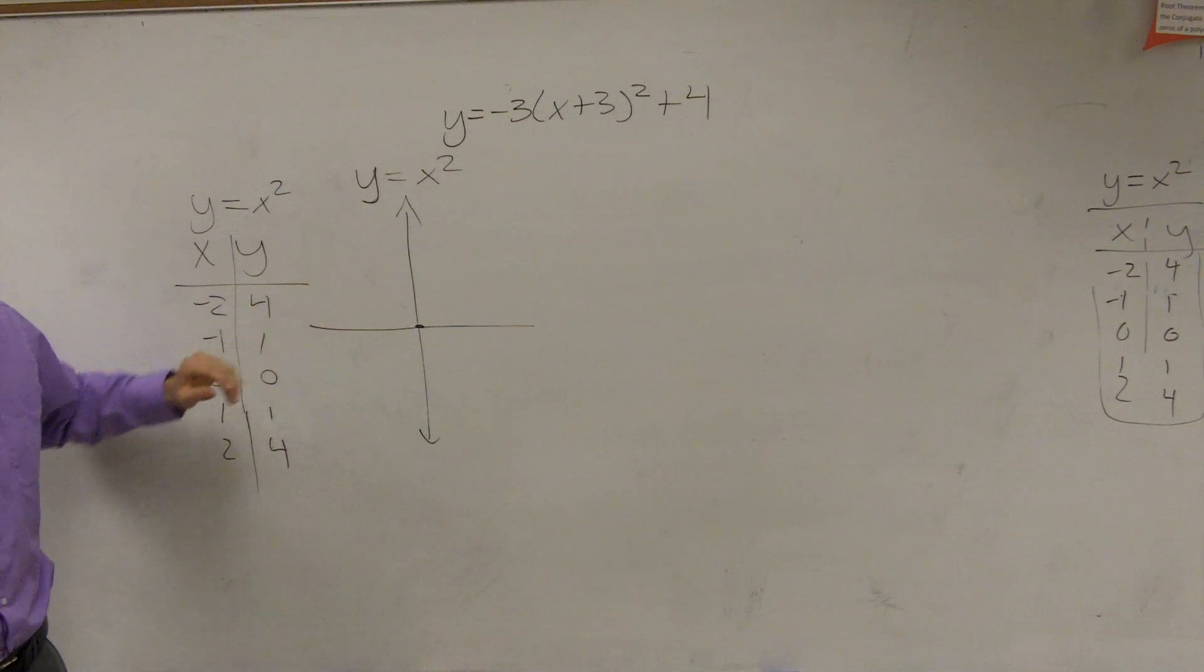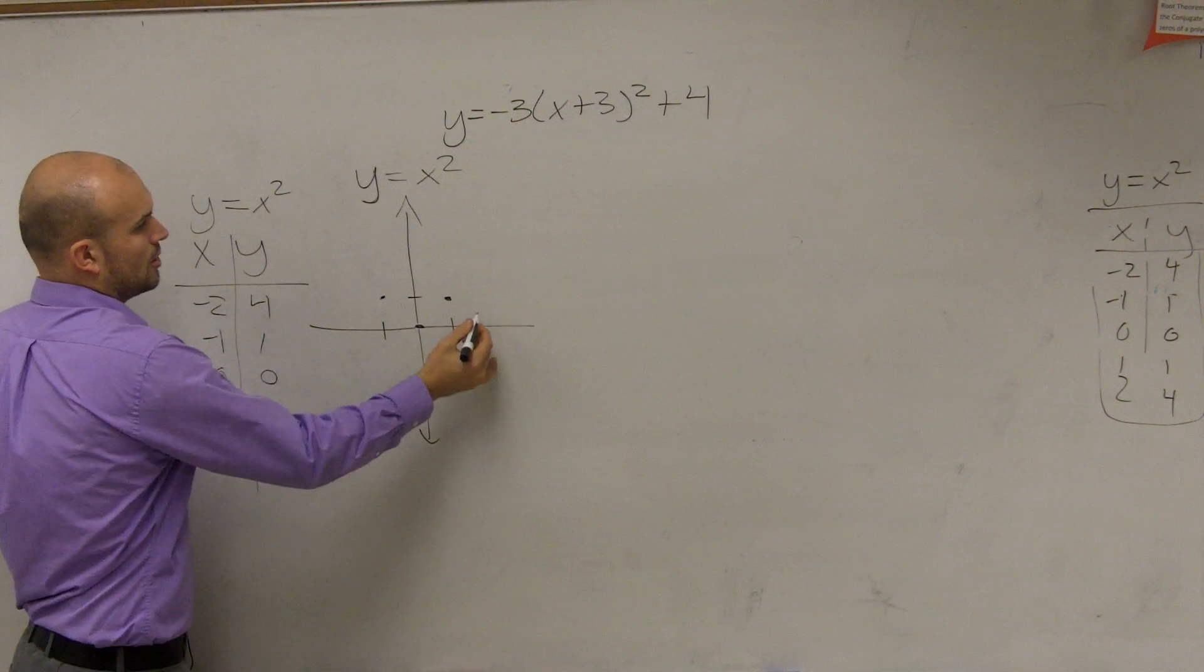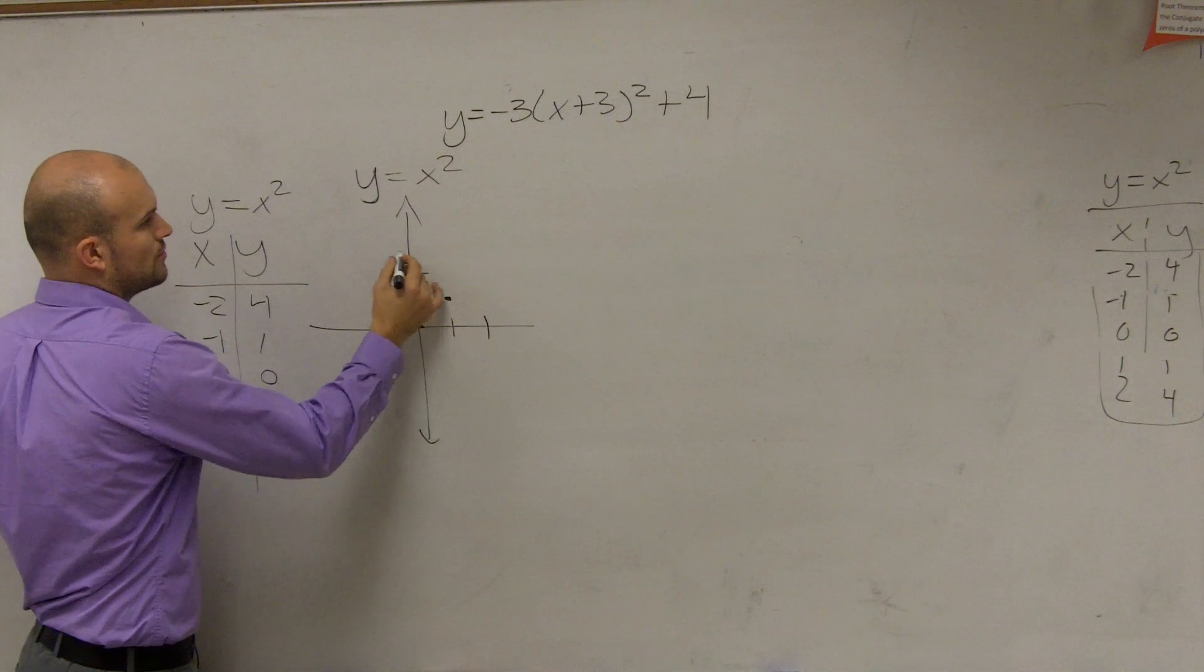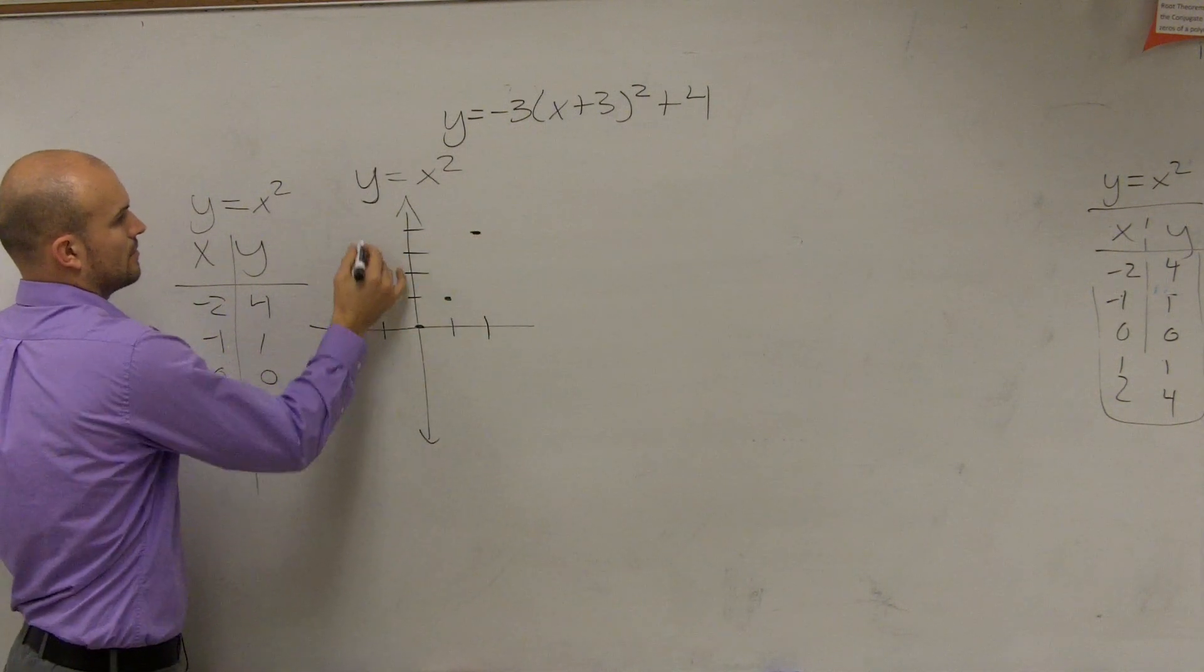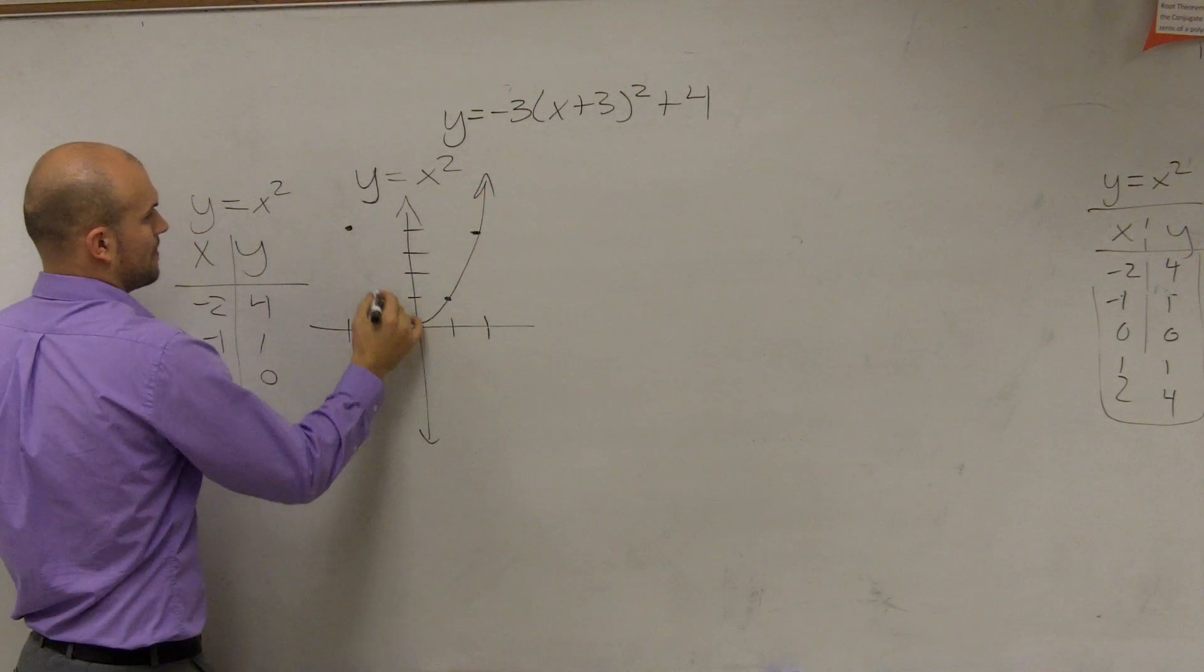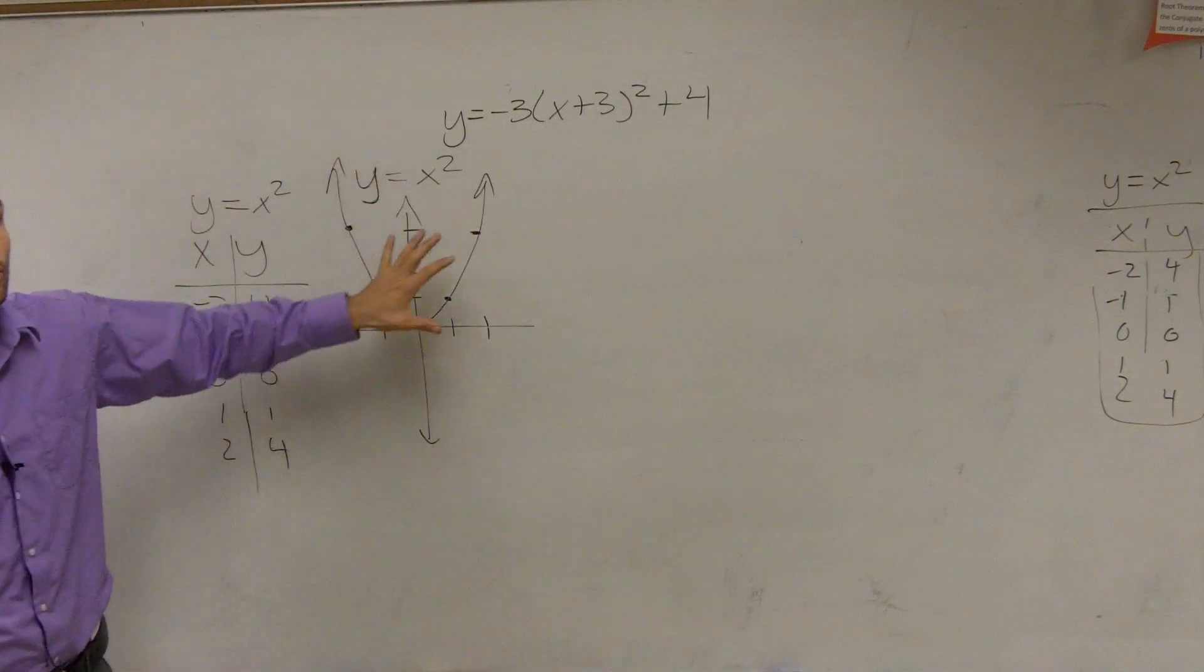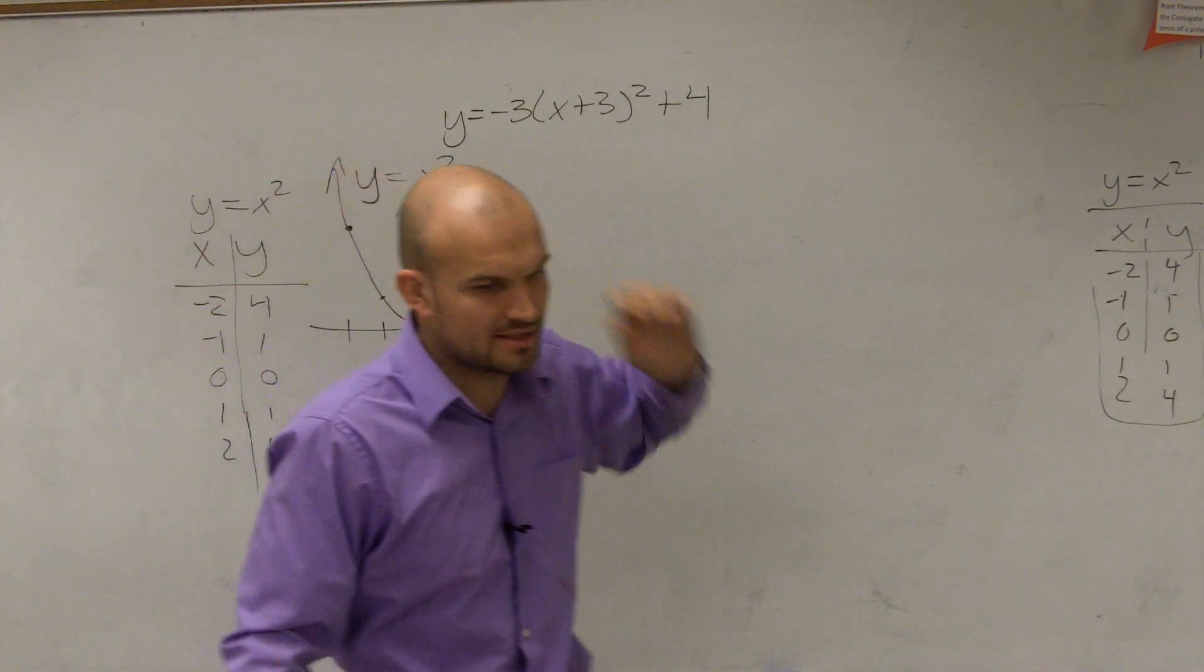So to graph this, if I go up 1 over 1, left 1 up 1, up 2 over 4: 1, 2, 3, 4. Therefore, that's what this graph looks like. We need to make sure it goes to these important points, because that's going to be very important when we look at our dilation that's going to affect the graph.